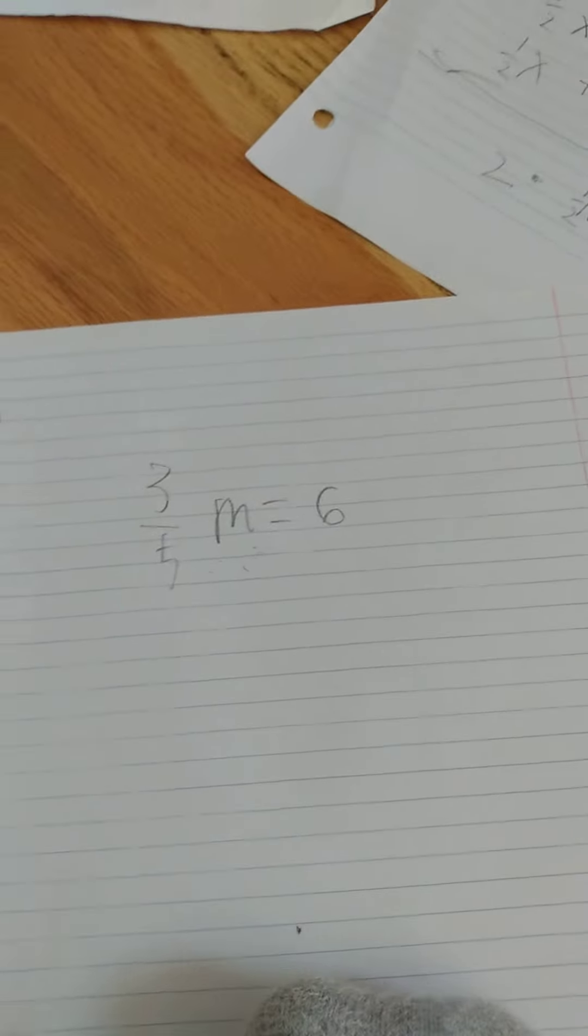Since there is a fraction, we're going to have to multiply the denominator both sides. When you say 5 times 3, that would be 15.